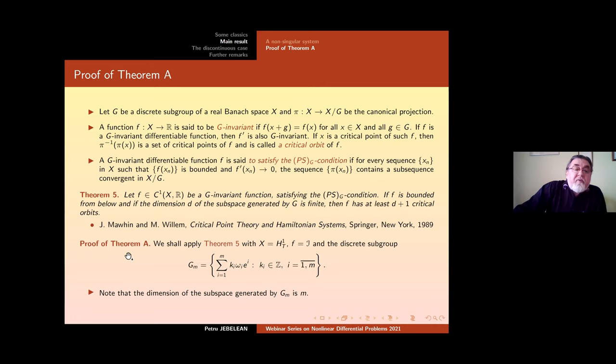And the main ingredient will be this Theorem 5 which is proved in the seminal work of Mawhin and Willem, Critical Point Theory and Hamiltonian Systems. It says that let f be a C^1 G invariant function satisfying the PSG condition. If f is bounded from below and the dimension d of the subspace generated by the discrete subgroup is finite, then f has at least d+1 critical orbits. This will be very useful because in the proof of Theorem A we shall apply this Theorem 5 with the following choices. X will be H^1_0, f will be calligraphic I and the discrete subgroup will be this one, namely sum from i=1 to m of k_i ω_i e_i, k_i being from Z.